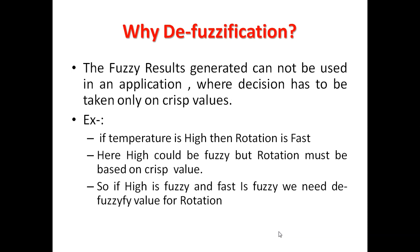Why do we need defuzzification? The fuzzy result generated might be unusable in some specific applications where a decision has to be taken only on crisp values. For example, consider the sentence: if temperature is high then rotation is fast. Here 'high' could be fuzzy, but rotation must be a crisp value because we cannot specify rotation in terms of fuzzy values. So even if 'high' and 'fast' are fuzzy, to get the actual rotation value we have to defuzzify them into crisp values to get a crisp result.